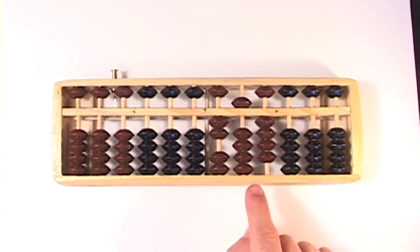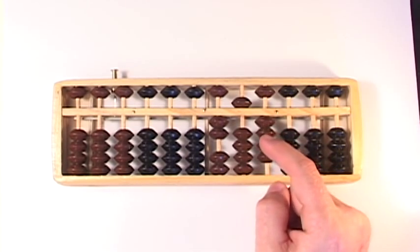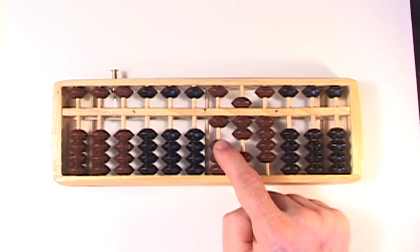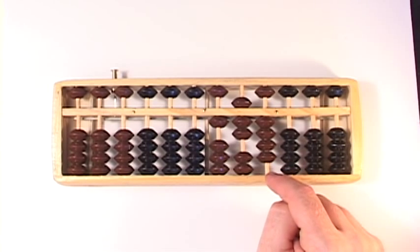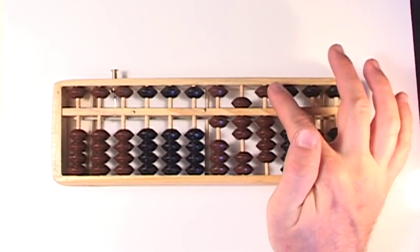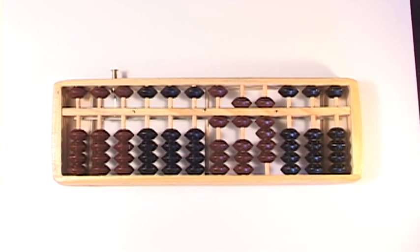There is an 8 that we need to take away in the 10s column. So we don't have enough here. That means we add the complement to the number 8, which is 2, and take away 1 in the next column over. And there is a 5 in the 1s column. We don't have enough beads, so we're going to add 5 and take 1 away in the next column over. 354 minus 185 is a 1, a 6, and a 9, 169. 354 minus 185 is 169.